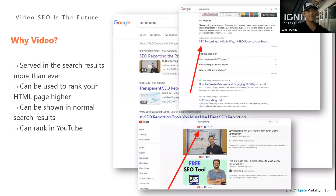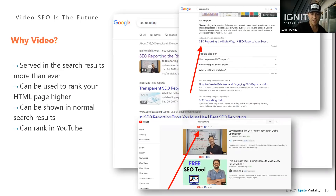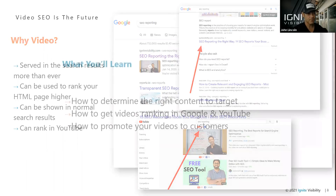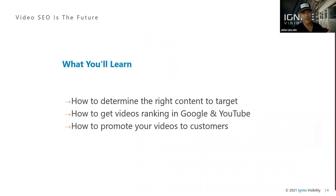So first thing, why video? Video is served in search results now more than ever, both mobile and desktop. It can be used to rank your HTML pages higher inside of Google. It can be shown in the normal search results and it can also rank really well in YouTube. You can see some examples of that — a video on SEO reporting that's had people coming in forever. Today I'm going to talk about how to determine the right content to target, how to get videos to rank in Google and YouTube, and how to promote your videos to customers.